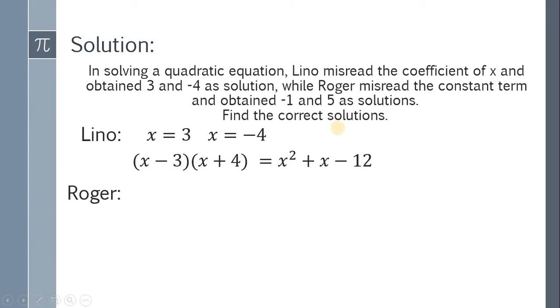For Roger, he misread the constant term and obtained negative 1 and 5 as solutions. We have x equals negative 1 and x equals 5. Converting this into factored form: x plus 1 multiplied by x minus 5. Multiplying, we get x squared minus 4x minus 5.